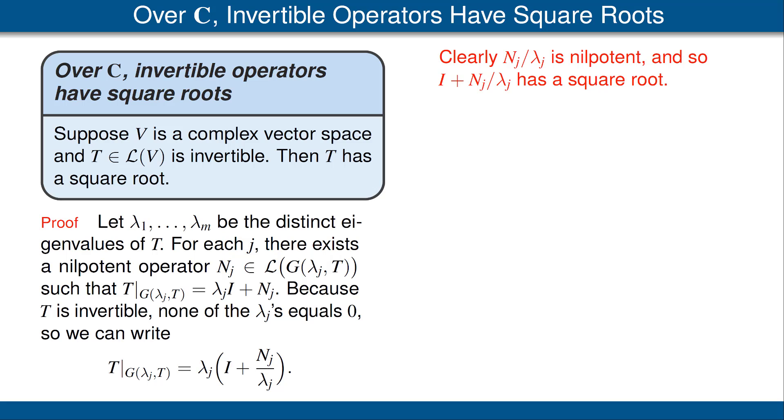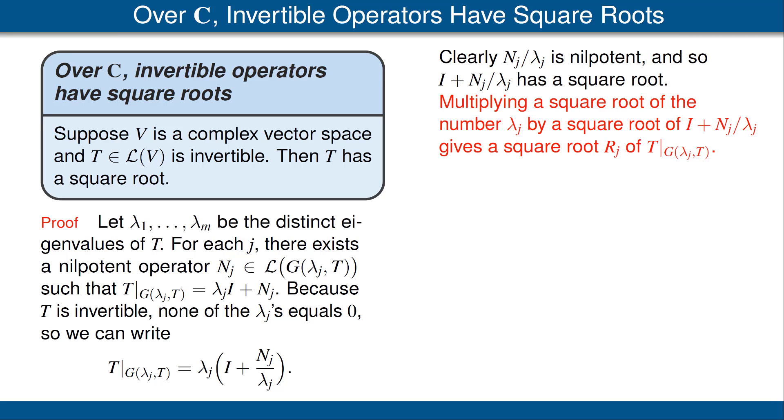Now, a nilpotent operator divided by a scalar is still a nilpotent operator. So the operator I plus Nⱼ divided by λⱼ is of the form I plus a nilpotent operator. The result from a previous slide says that this operator has a square root.